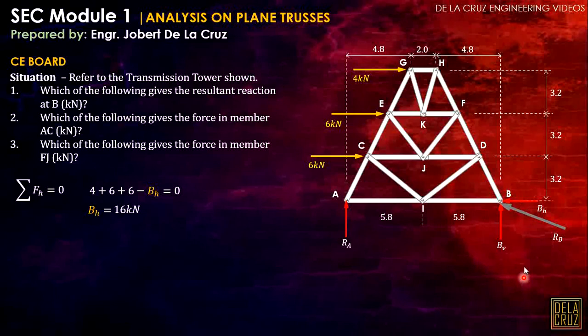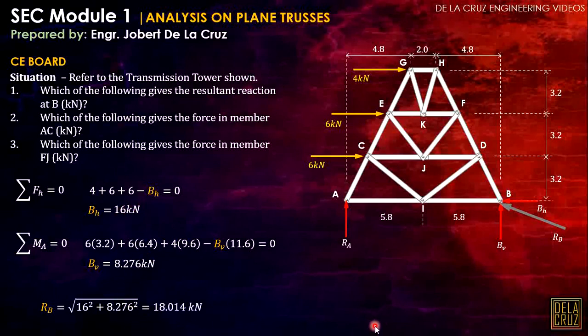Now, how to calculate the vertical component of B? That is by summation of moment about A should be 0. We have 6 times 3.2 plus 6 times 6.4 plus 4 times 9.6, then the BV will cause a counterclockwise rotation about A. So that is minus BV times 11.6. So we have BV equals 8.276 kilonewtons.